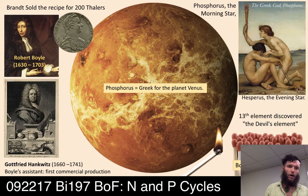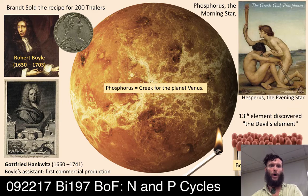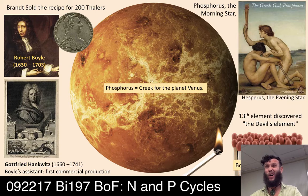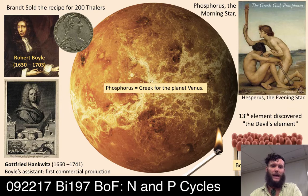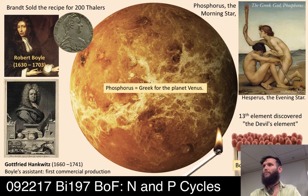Still unable to pay his bills and never having found the Philosopher's Stone, Brandt sold his recipe for 200 sailors — a German coin. The recipe circulated among the scientific eccentrics of the time. Enter Robert Boyle, who repeated the experiment — many people started boiling urine down, and Boyle was one of them.